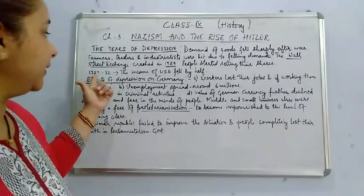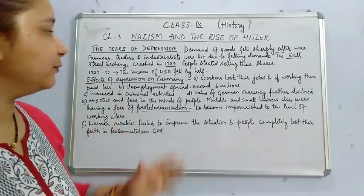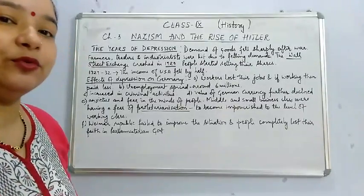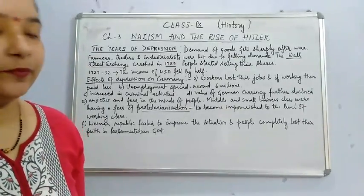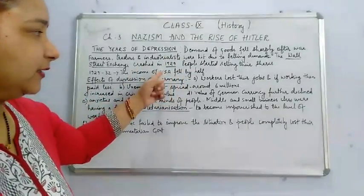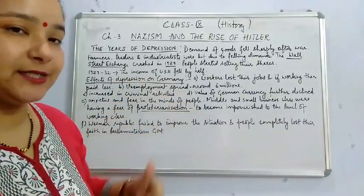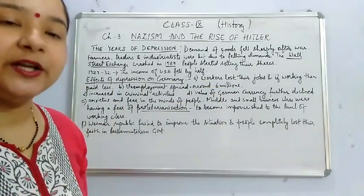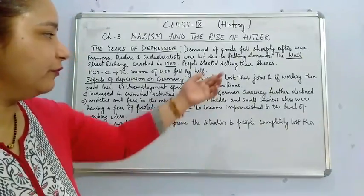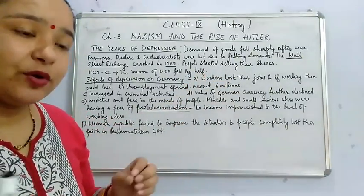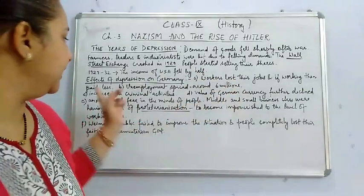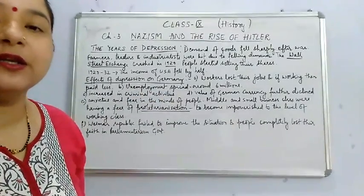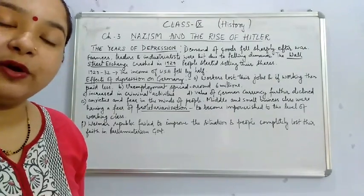From 1929 to 1932, the USA's annual income fell to less than half. Now, talking about Germany — what was the effect of the Depression on Germany? Workers lost their jobs because industries shut down and industrial activity moved to other countries. Those who still had some work were paid less — their income fell. Unemployment spread on a widespread scale in Germany; around three million people were unemployed.